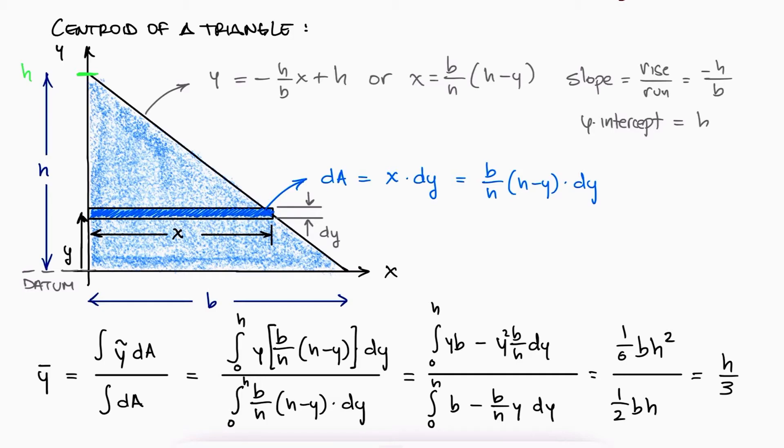And since this process was done using variables for the base and the height, not specific unique numbers, this will always be true for any triangle. The centroid of a triangle will be located at one third the height measured from the base of the triangle. And it works for both directions.